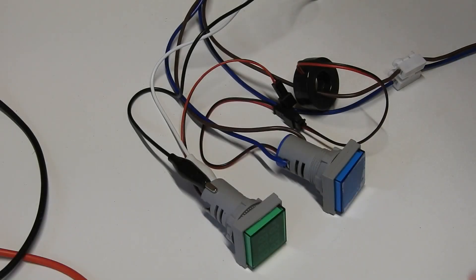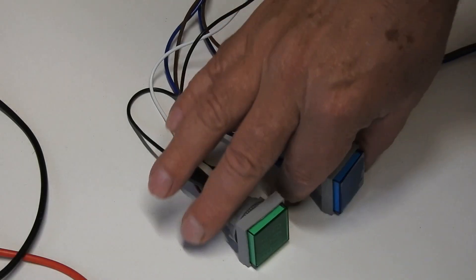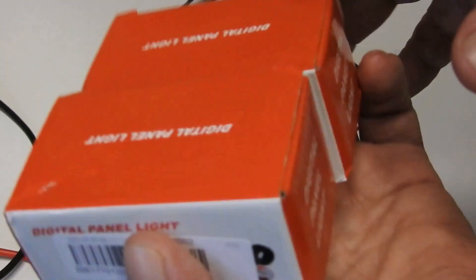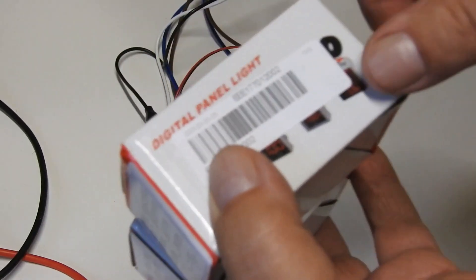I thought I'd just do a quick review and teardown of these little AC panel meters that I got recently. They come in little boxes like that, they're called digital panel lights.